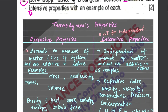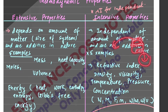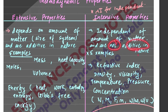We know that extensive properties depend on the amount of matter. If we know the amount of matter, as the amount of matter becomes more, the property changes. The amount of matter depends on the density of different parts.